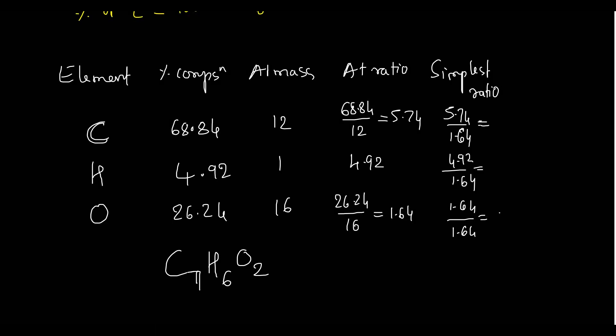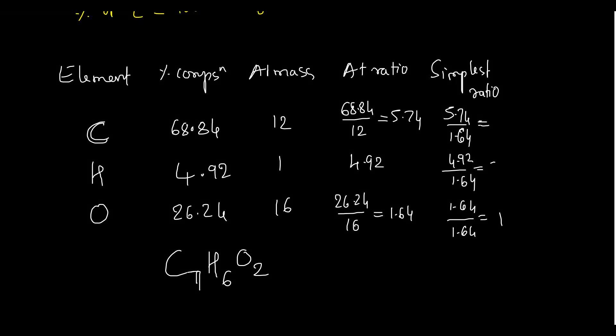Smallest atomic ratio is 1.64. Divide all by 1.64: carbon = 5.74 ÷ 1.64 ≈ 3.5; hydrogen = 4.92 ÷ 1.64 = 3; oxygen = 1.64 ÷ 1.64 = 1. Since 3.5 is not a whole number, multiply all values by 2: carbon = 7, hydrogen = 6, oxygen = 2. Empirical formula is C₇H₆O₂.